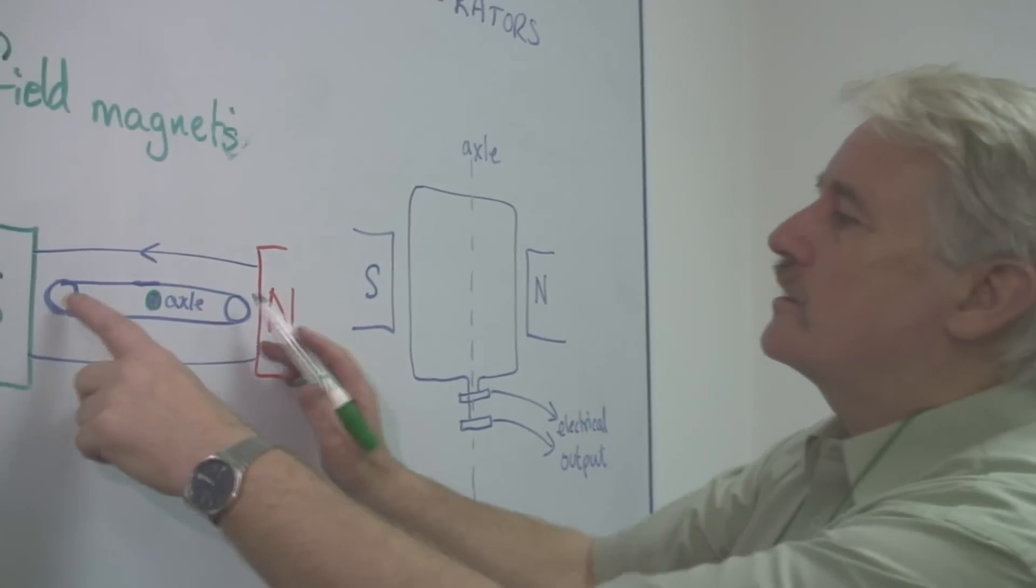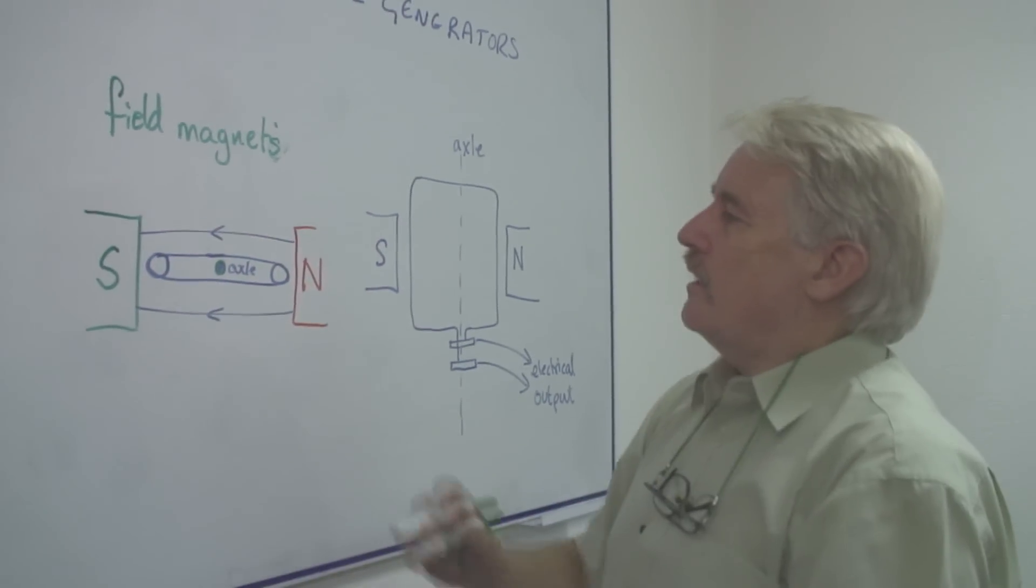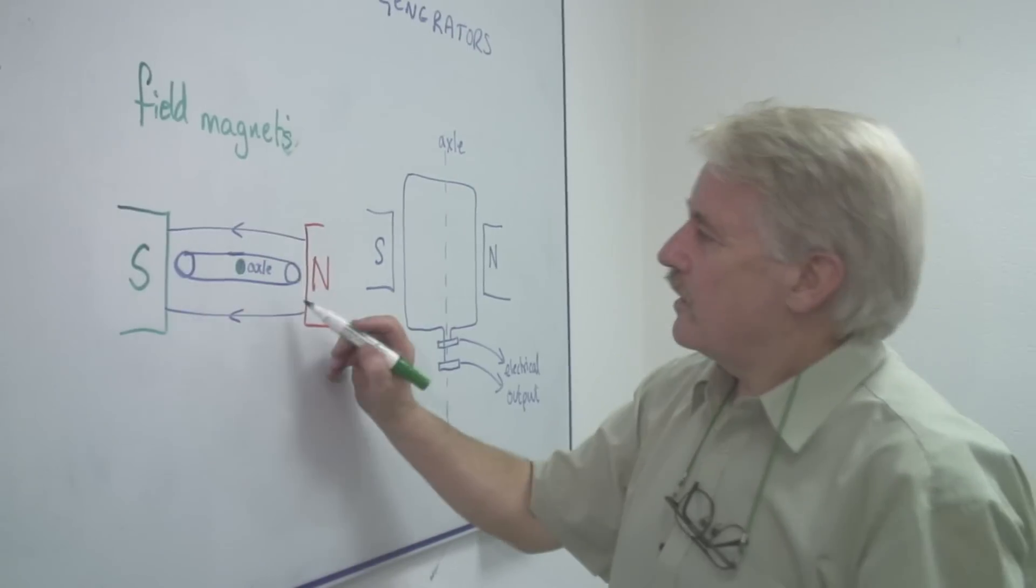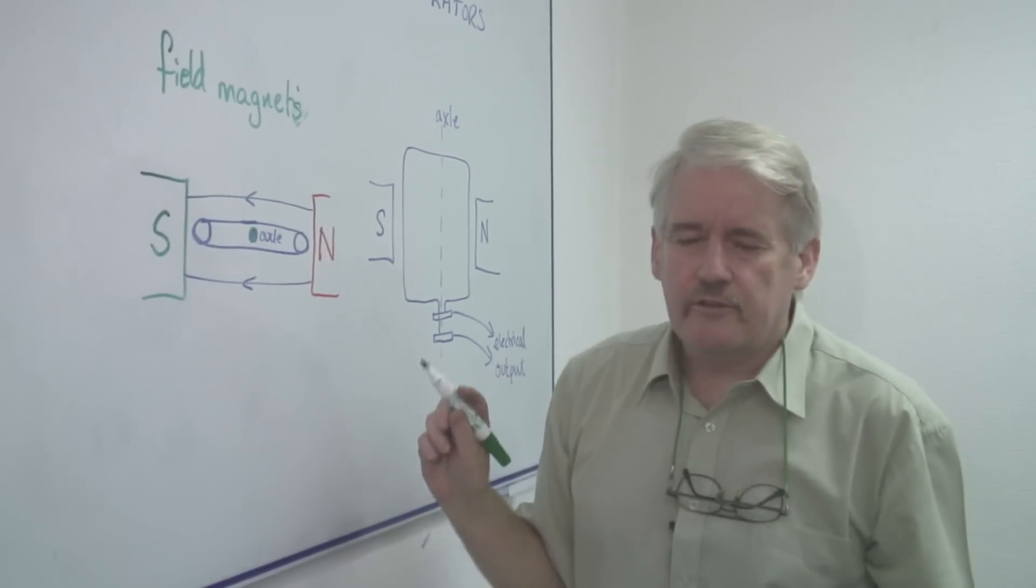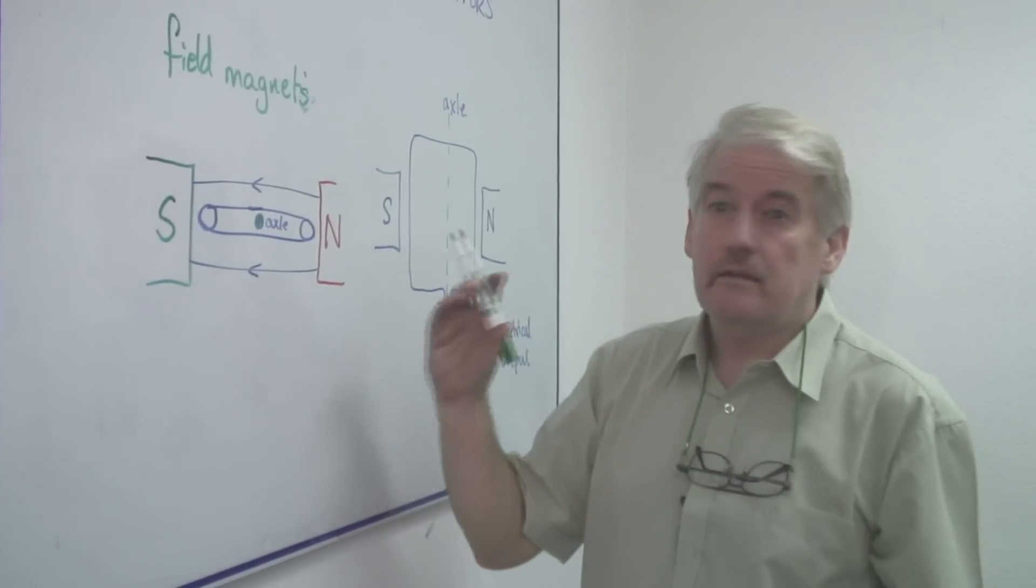And this is looking at it from the side. Now as you can see, we've got a field line going across. You can't see this of course, this is just representing the field.